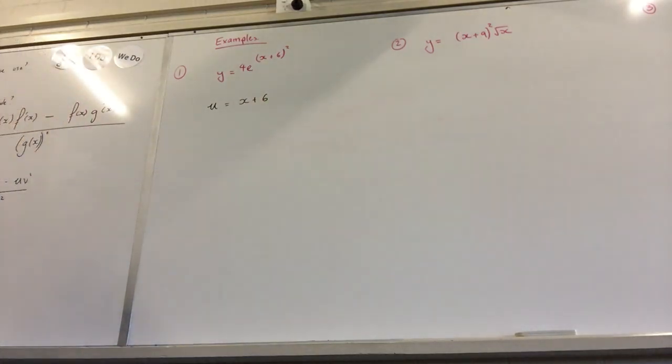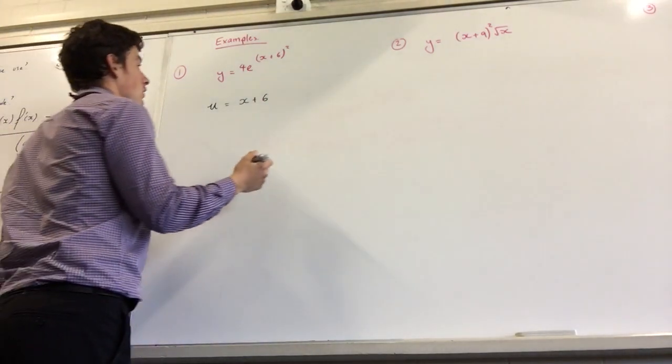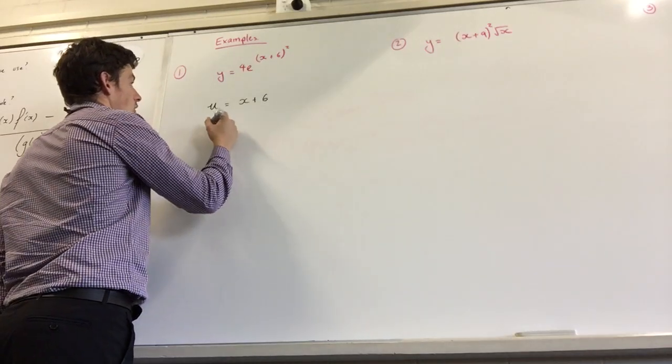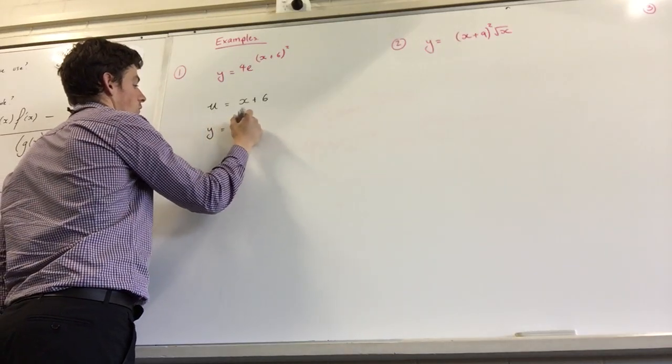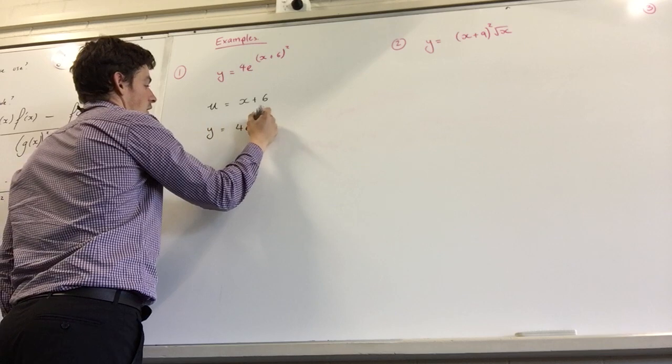What's another method we just did? Substitution. So y now equals 4e to the u squared.